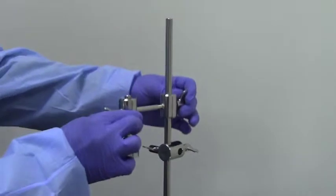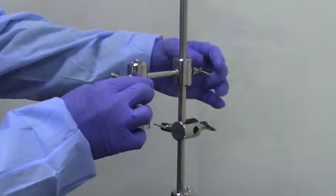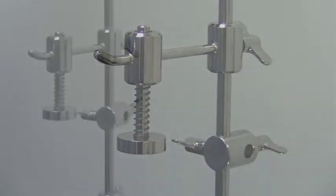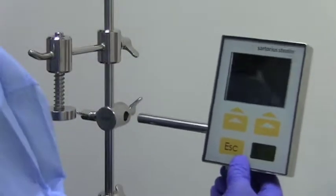Next, attach the spring-loaded bottle holder. This keeps the tension between the holding ring and the bottle. Place the control unit in the holding clamp.